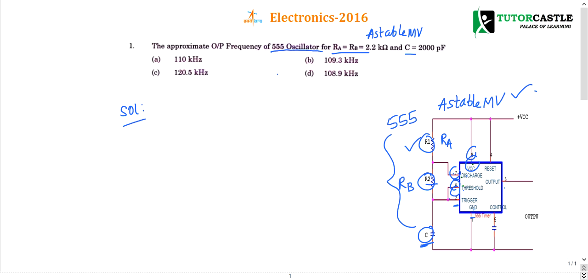So whenever 555 timer is acting as an astable multivibrator, we can calculate its frequency of oscillation as follows. F is nothing but 1 by T. T is nothing but the time period of oscillation.